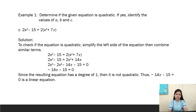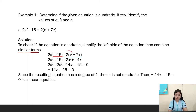Another example: 2x² - 15 = 2(x² + 7x). To check if the equation is quadratic, simplify the right side and combine like terms. Expanding gives 2x² - 15 = 2x² + 14x, since 2 times 7x = 14x.